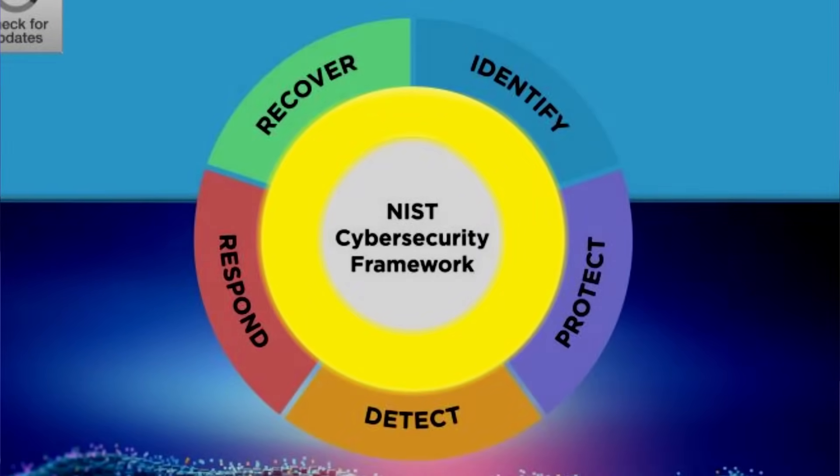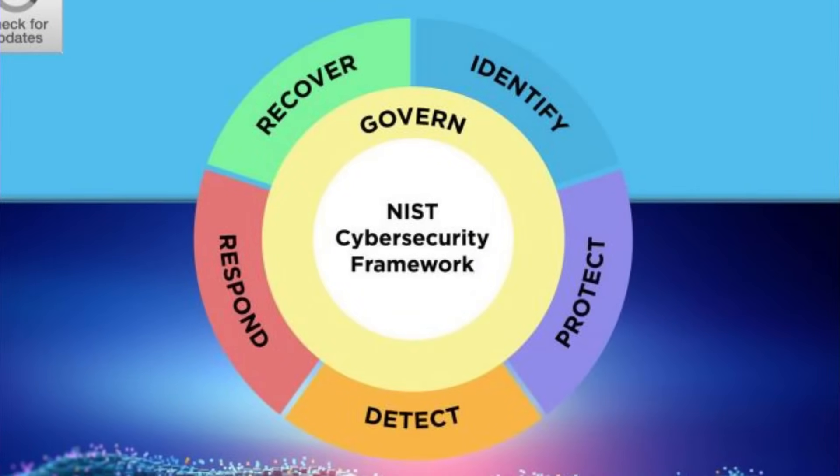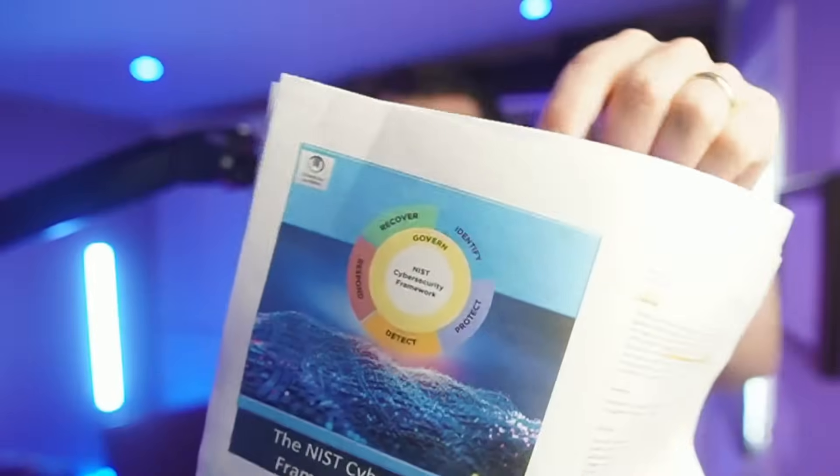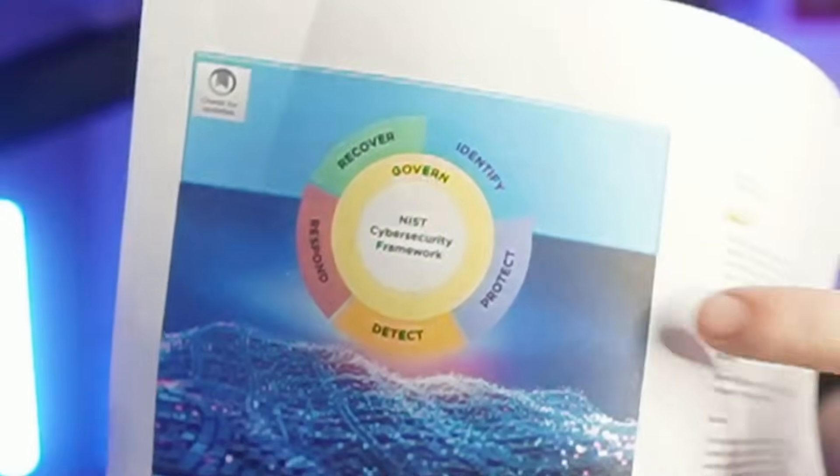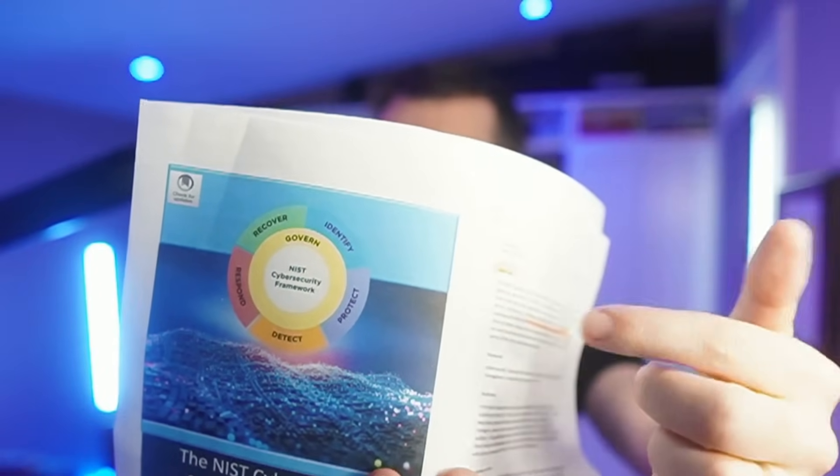We've covered what NIST CSF is, how to implement it, and some great changes in 2.0, but let's cover what you need to know about the new version. First: the new function, Govern. It's right on the cover of the document — it's the donut that goes all around the other functions. Identify, Protect, and Detect are inside, and Govern is the glue that holds it all together. It's a new function, but many of its subcategory outcomes will look familiar — it's a reshaping of existing subcategories and outcomes.